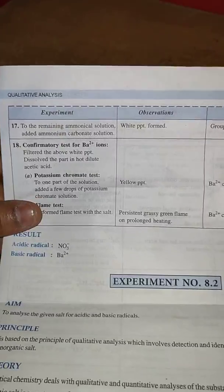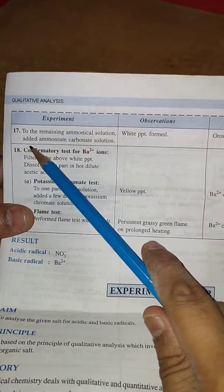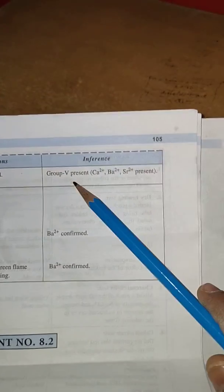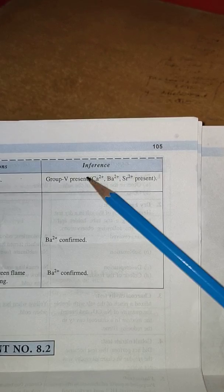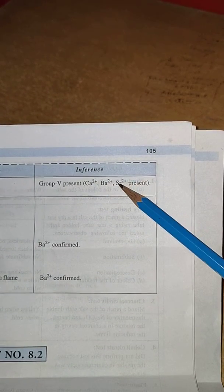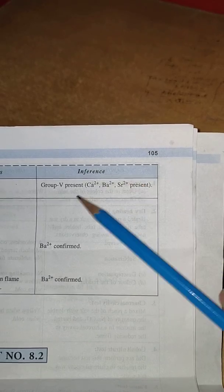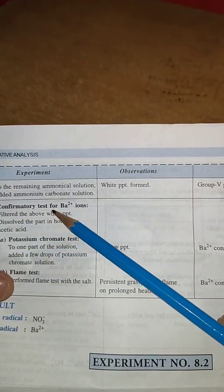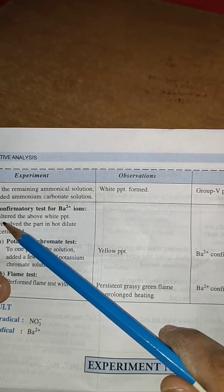Now come to the end of the practical: to the remaining solution add ammonium carbonate solution. White precipitate is formed, that means group fifth present. Group fifth includes calcium, barium, and strontium. One of these three will be present.